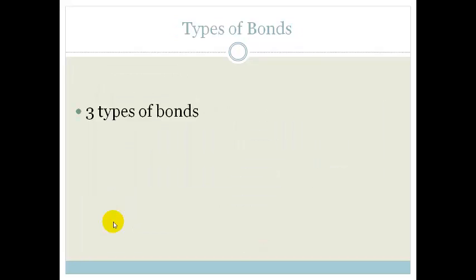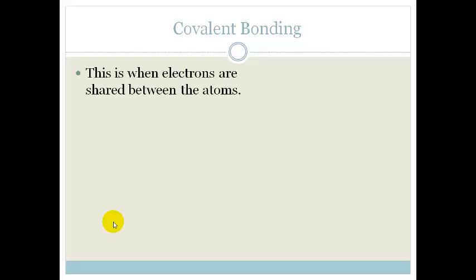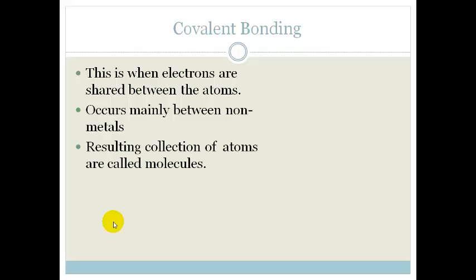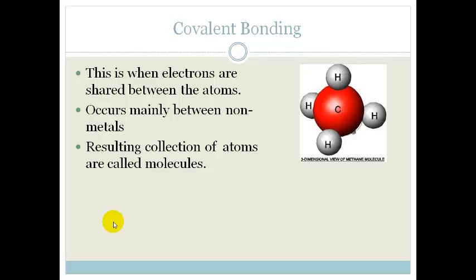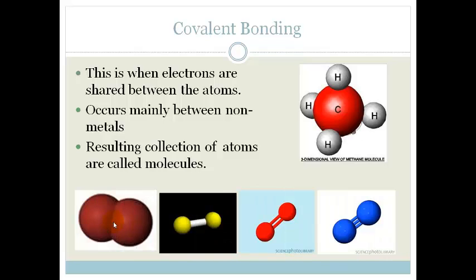Now there are three types of bonds: covalent bonding, ionic bonding and metallic bonding. Let's talk about covalent bonding. This is when electrons are shared between the atoms. It occurs mainly between nonmetals and results in a collection of atoms called molecules. So in other words, your molecular compounds are formed from covalent bonding.